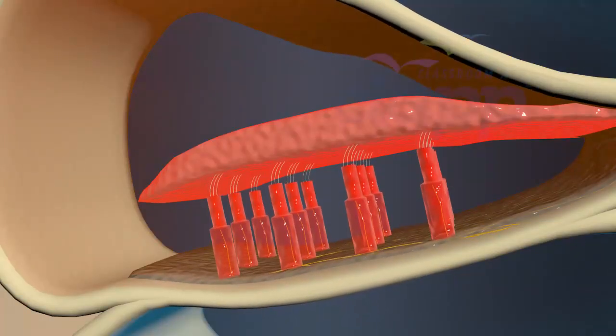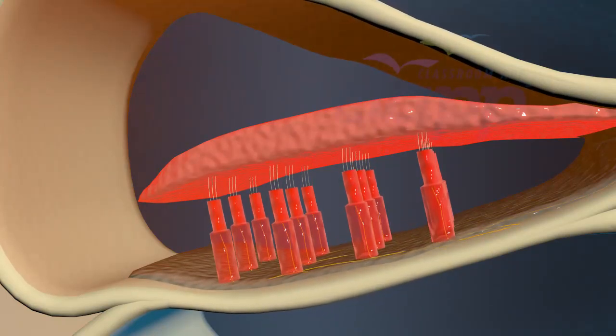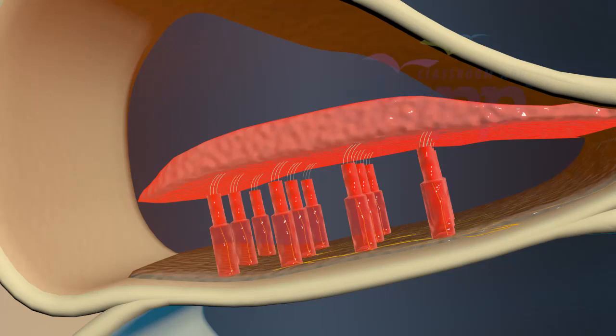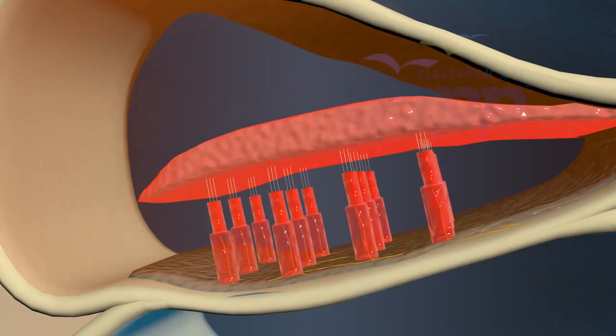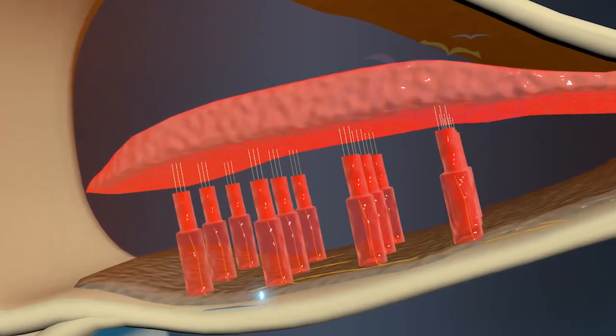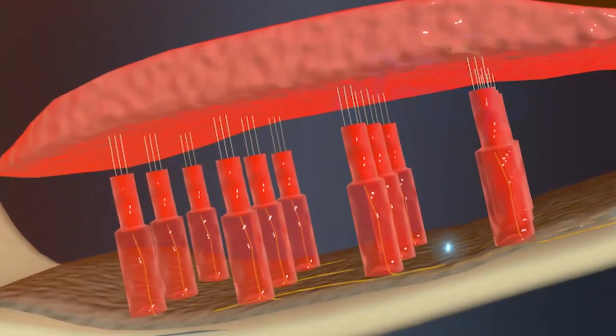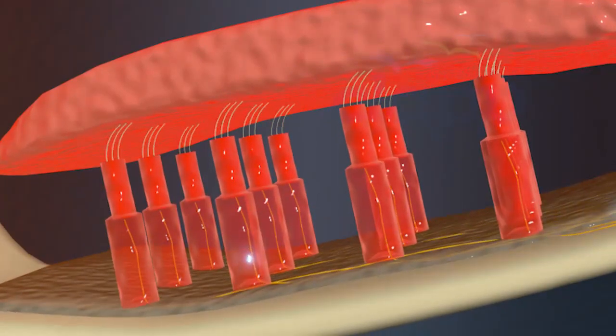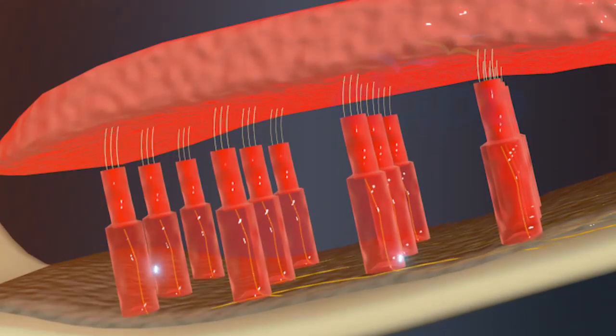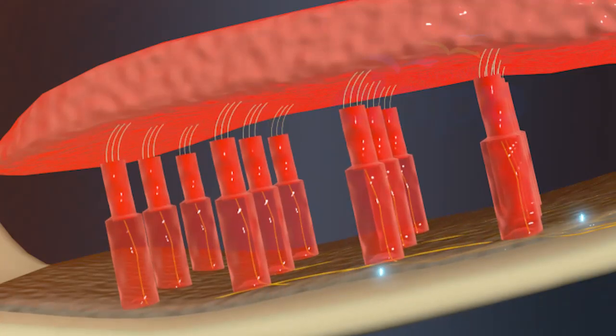The movement of the endolymph causes the basilar membrane to move, and this causes the movement of hair cells in the basilar membrane. The stereocilia, which are situated on top of the hair cells, are bent against the tectorial membrane, and this generates electrical signals corresponding to those vibrations.